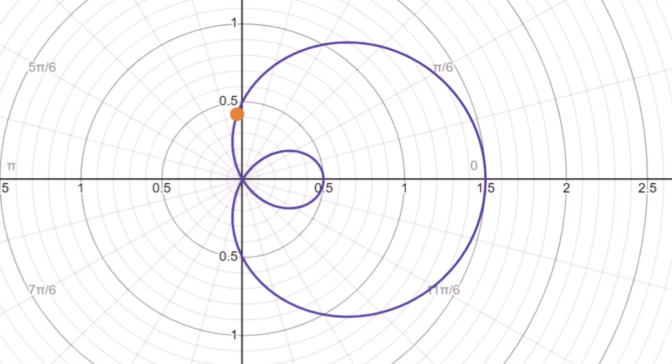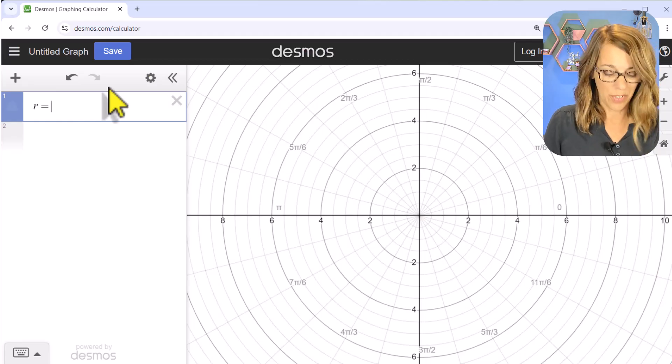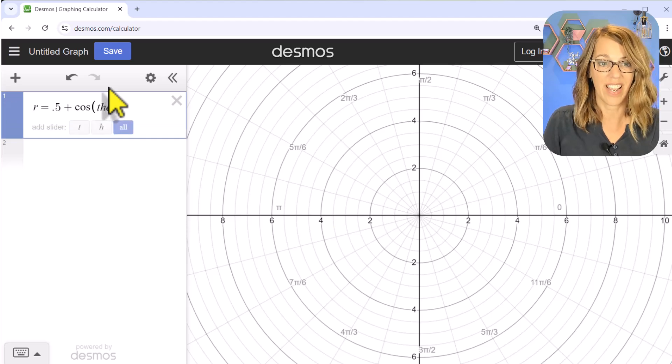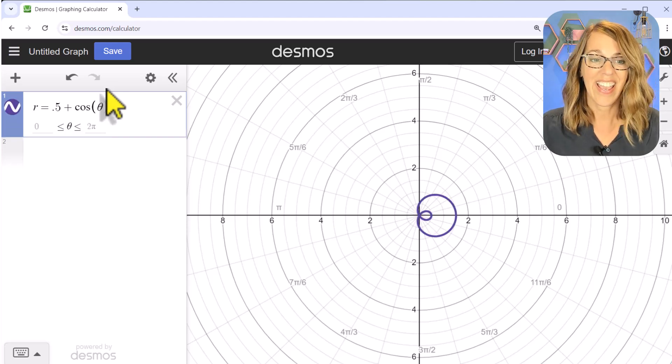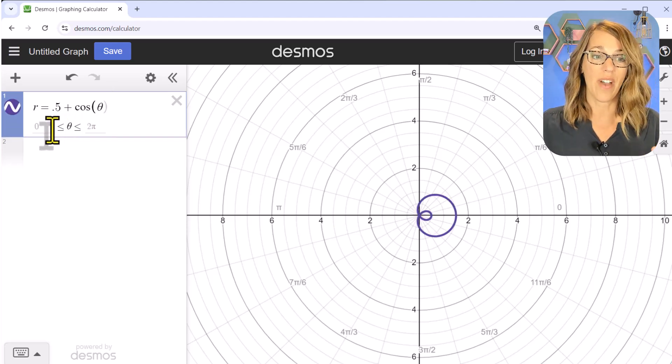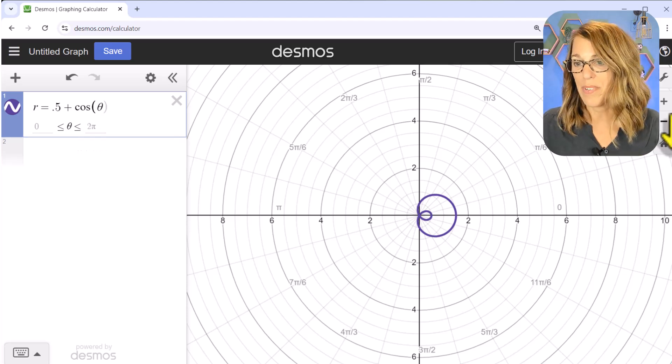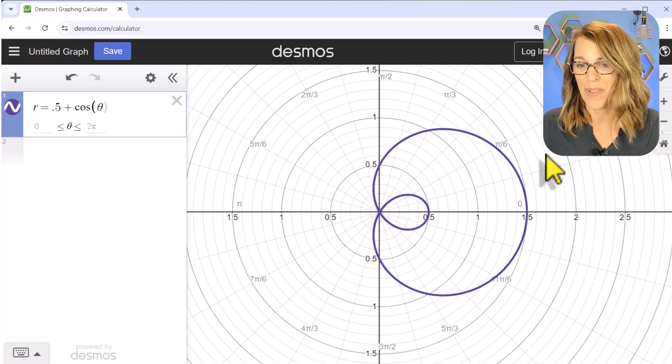The second graph that I want to look at is a limaçon, and we're going to explore points and tracing with this graph. This one is r equals—I'm going to do 0.5 plus cos(θ), t-h-e-t-a, and notice it gives me some parameters so I can go from 0 to 2π. Let me zoom in a little bit so you can see that better.